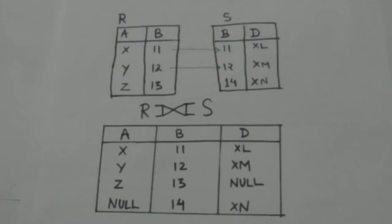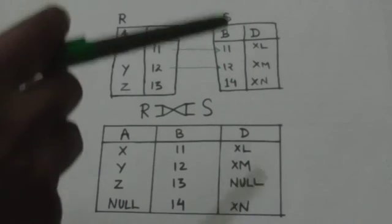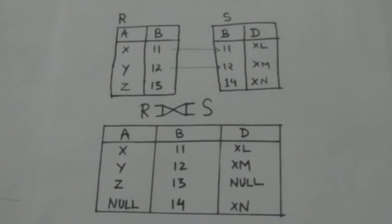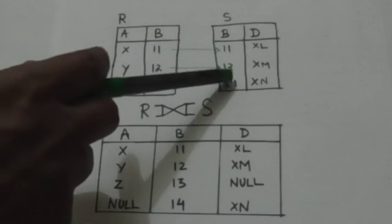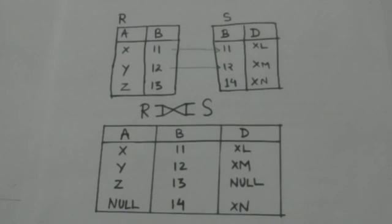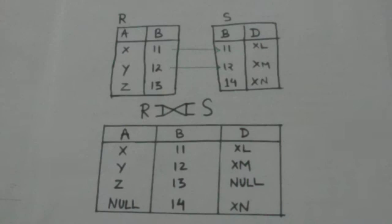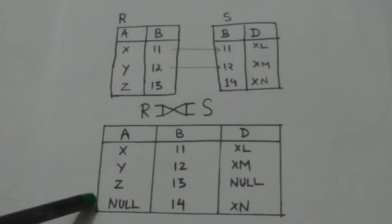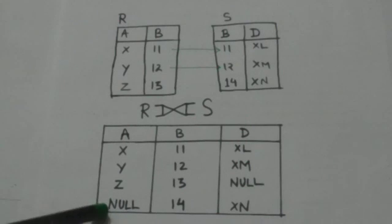Now see this tuple of relation S — it doesn't have any matching tuple in relation R. It is also present in the resulting relation, and the attributes of relation R are paired with null values in the resulting relation. Thank you very much.